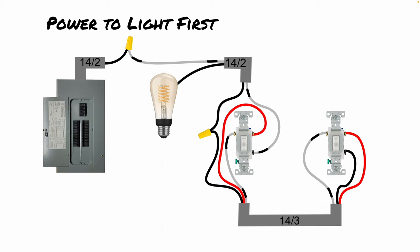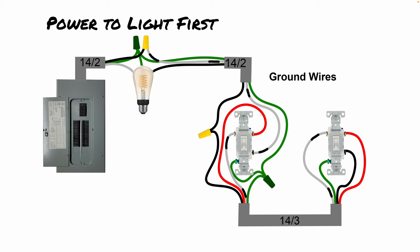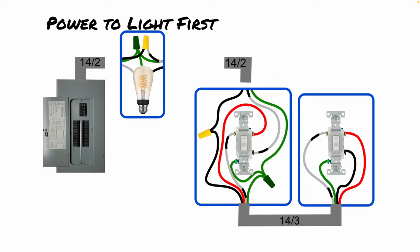Now that we've shown all the hot wires and travelers, let's add the neutral. In this situation, the neutral only has to travel a short distance to the light fixture to complete the circuit. Adding the ground — you can also see on the left switch there are two splices, one for the power and one for the ground. Here again is what this looks like broken down by each individual box to make everything crystal clear.